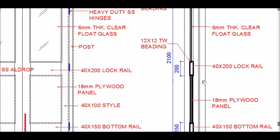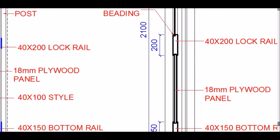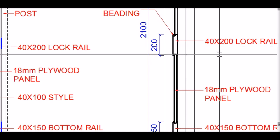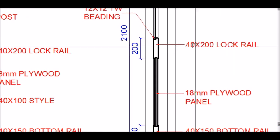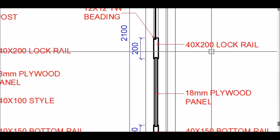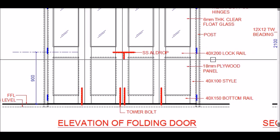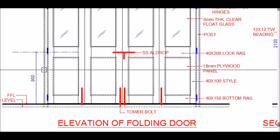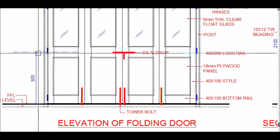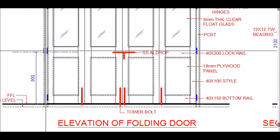Below the top rail is the lock rail, positioned so that its center is at 900mm from the finished floor level. The lock rail is slightly larger in height than the other rails — it is 40 by 200mm.